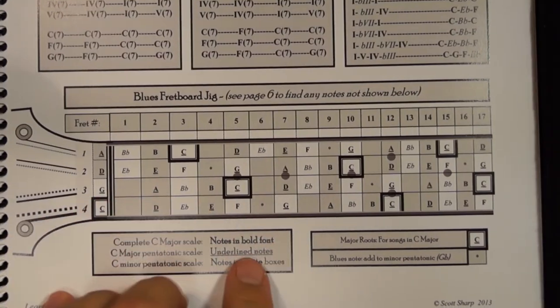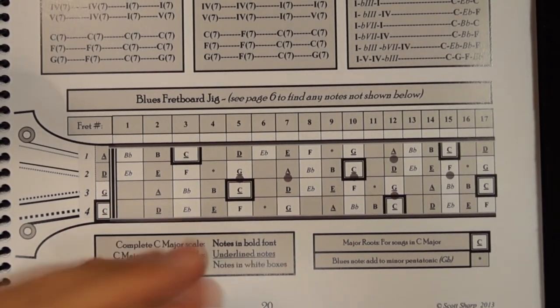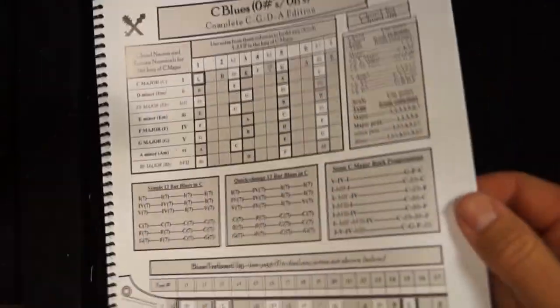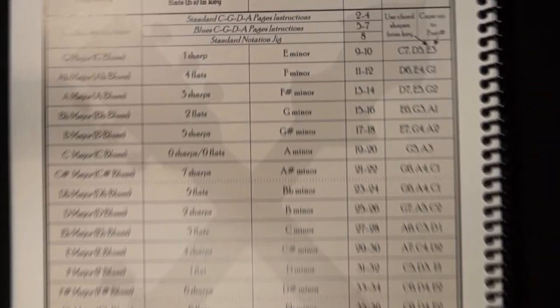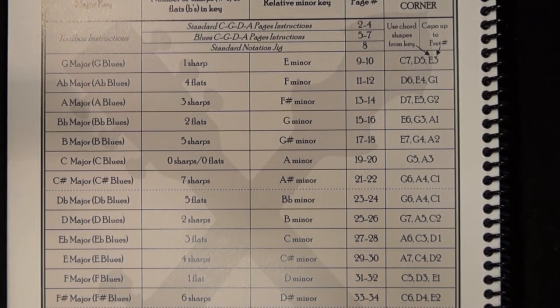That's all there is to seeing these scales all up and down the fretboard. The cool thing about the Fretboard Toolbox is that there's a page like this for all 14 major, relative minor, and blues keys. When you can see all that information for each scale, it really starts opening up cool ideas. I appreciate you taking a look — I hope you found something useful today, and I'll have lots more videos coming. Thanks for stopping by.